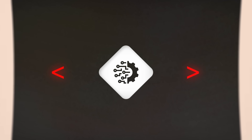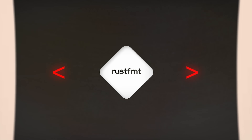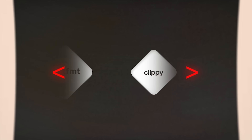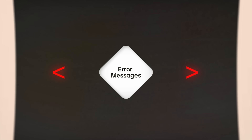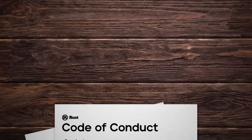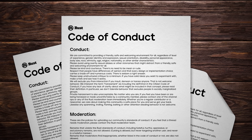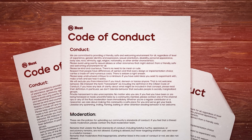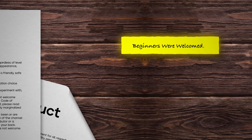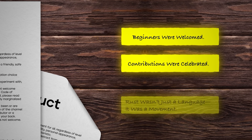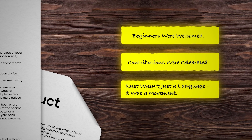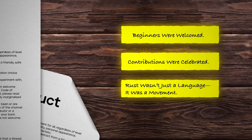Tooling became a top priority: Rustfmt for formatting, Clippy for linting, great error messages, and first-class IDE support. A code of conduct ensured Rust's community stayed inclusive and kind. Beginners were welcomed, contributions were celebrated. Rust wasn't just a language — it was a movement.